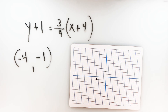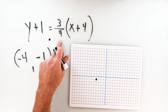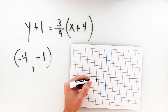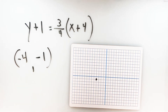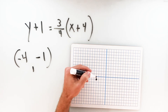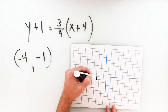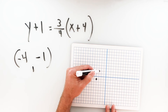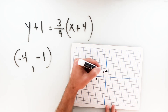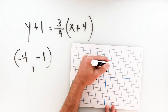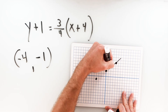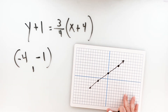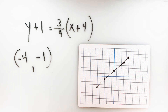I've got one point and I need two to create a line, so I'll use the slope. The slope is three-fourths, meaning from my starting point at negative 4, negative 1, I go up 3 and to the right 4 to get the next point. I can do this a couple of times to get a good solid line. So this is the graphical representation of this line given in point-slope form.